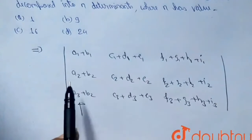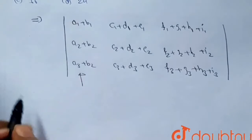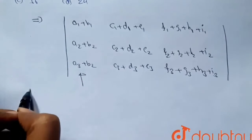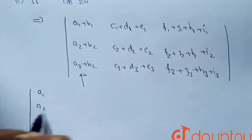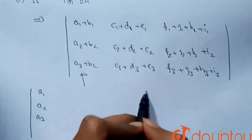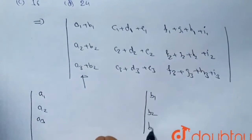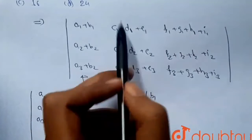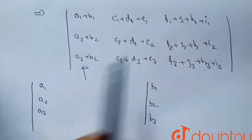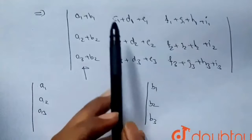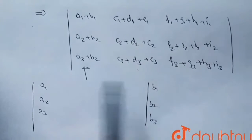We can divide this determinant into two different determinants using the first column. The first determinant will have the first column as a1, a2, a3 and the second determinant will have its first column as b1, b2, b3. The second and third columns remain as they are in both determinants. So using the first column, we split into 2 determinants.